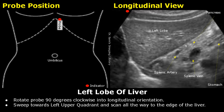This small, round, anechoic structure is the splenic artery. This large, rounded structure behind the pancreas is the splenic vein. The stomach may also be seen.